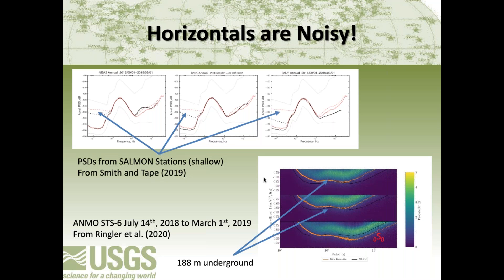Horizontal seismic data is incredibly noisy. Looking at plots from a recent experiment in Alaska, the dashed lines show horizontal noise levels and solid lines are verticals — about 40 dB of separation. These sensors were installed in shallow locations and are sensitive to tilt, which causes this separation. If we install a sensor 188 meters underground, we can largely eliminate that and get horizontal data somewhat similar to vertical data. However, installing instruments 188 meters below ground is not easy.